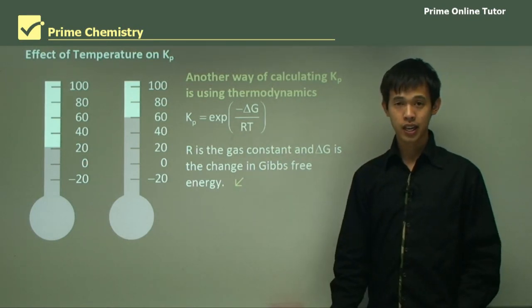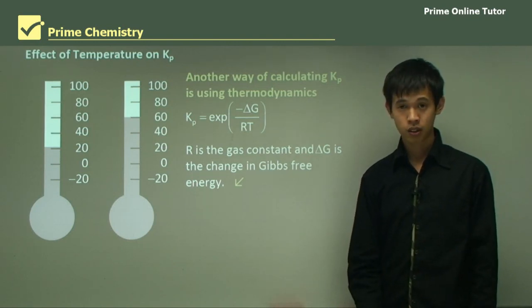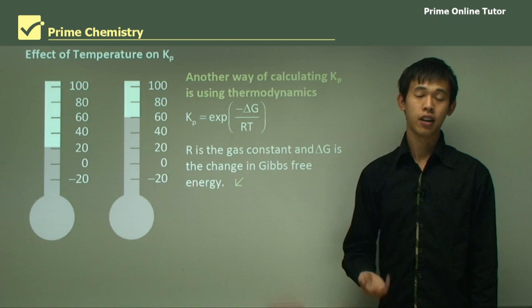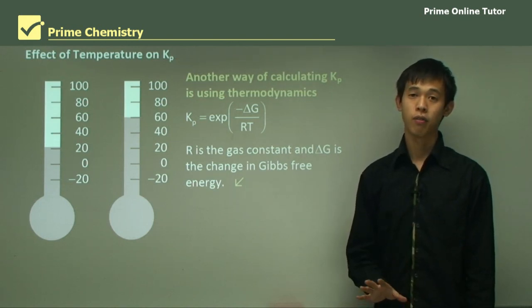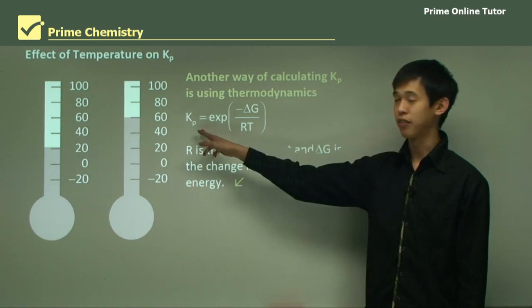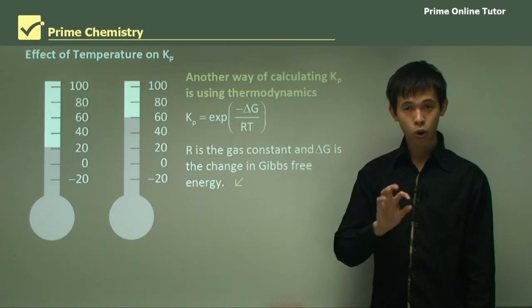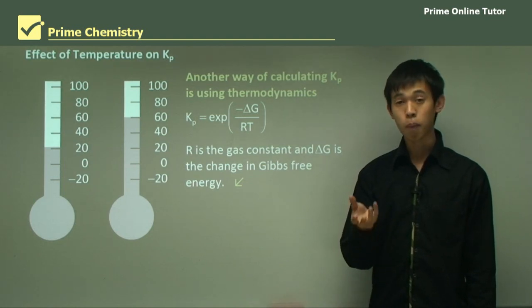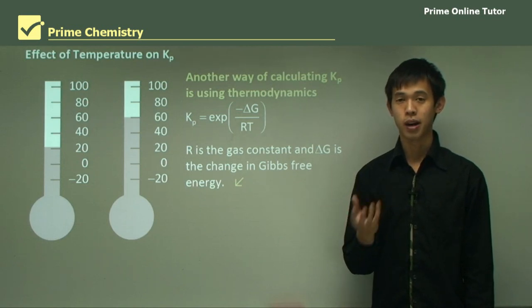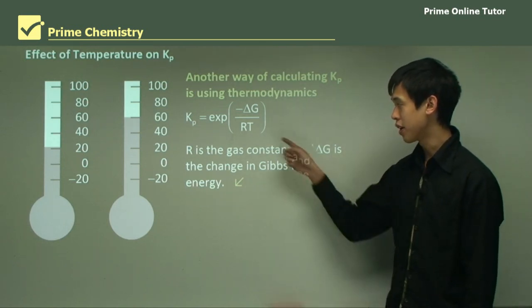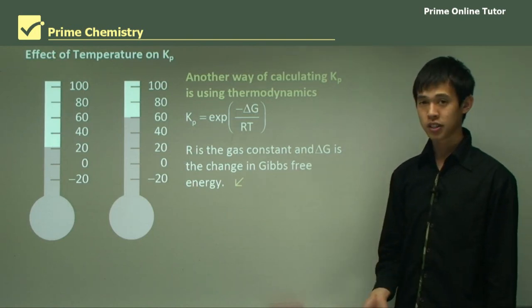So that wraps up today's lesson on factors affecting the equilibrium constant. So the main thing to take out of today's lesson is simply that temperature is the only thing that can alter the value of Kp. Changing the concentration or changing the pressure will cause a change in the concentrations of chemicals. But that change sort of keeps Kp constant no matter what, as long as there's no change in T, right? So we'll move on to the question segment.